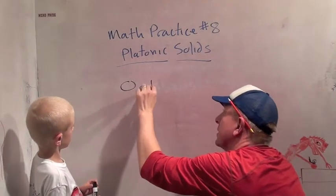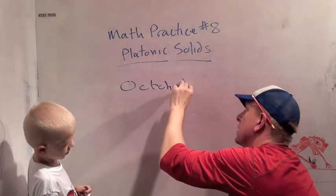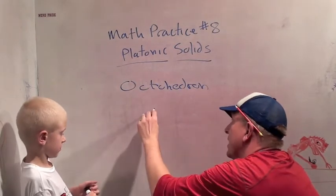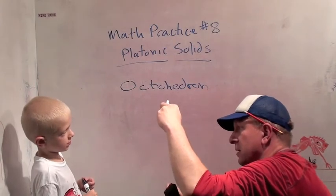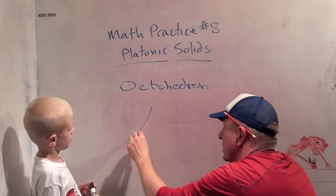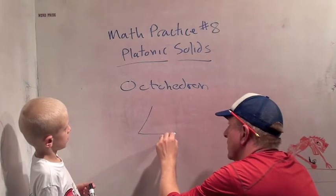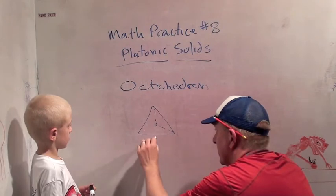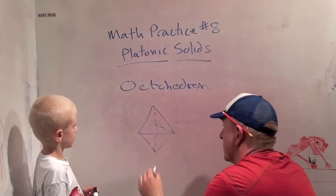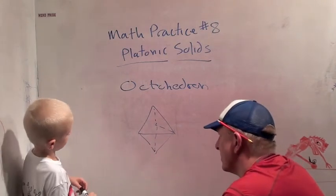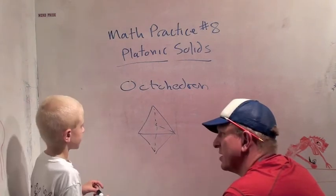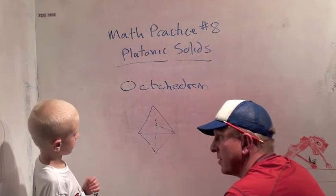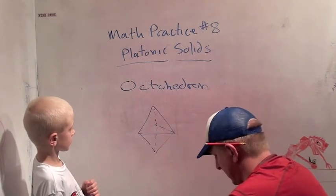An octahedron. Do you know what octo means? Eight. Eight. An octahedron is basically two tetrahedrons on top of each other. So. And then it goes down like this. Okay. Can you sort of picture what that looks like? Yeah. Can you imagine two tetrahedrons on top? So it has eight sides, eight faces, and they're all triangles. Does that make sense? Yeah.